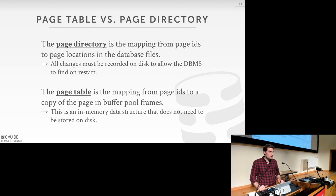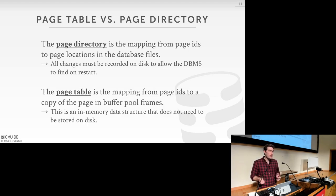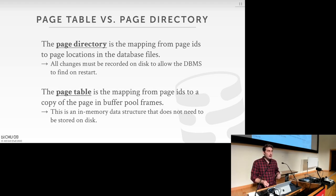The page directory is the mapping from page IDs to physical locations of pages on disk — this needs to be persisted so we can load it in the future to track down individual pages. The page table is ephemeral, just in memory. We don't need to persist it — it gets built up over time as we execute queries, and if the system shuts down or loses power, it's okay if it gets wiped out, because when we start up again with new queries, it's going to look completely different.